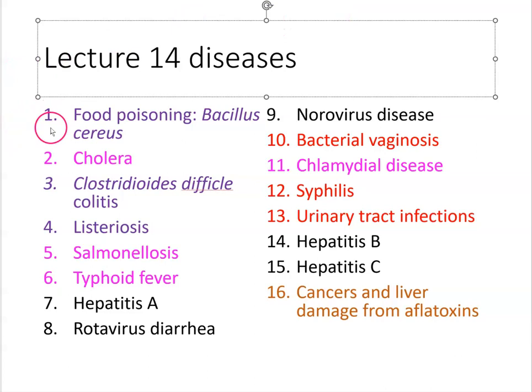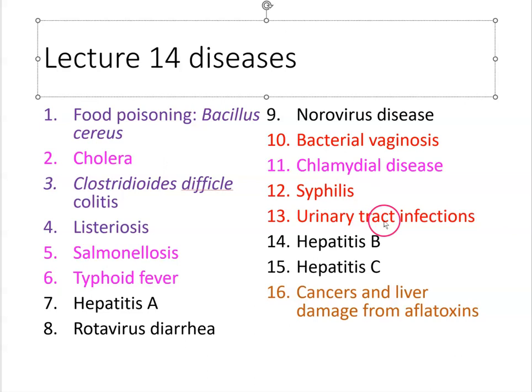I went through and color-coded these. The purple ones are caused by gram-positive bacteria, the pink ones by gram-negative bacteria, and the black ones are viruses. Red is for weird things — like bacterial vaginosis, which is dysbiosis and doesn't have a single causative agent. Syphilis is caused by a spirochete, which isn't really gram-negative or gram-positive. Urinary tract infections can be caused by a ton of different bacteria, some gram-positive, some gram-negative, so red again. Fungus gets an orangish-brown — the worst color.